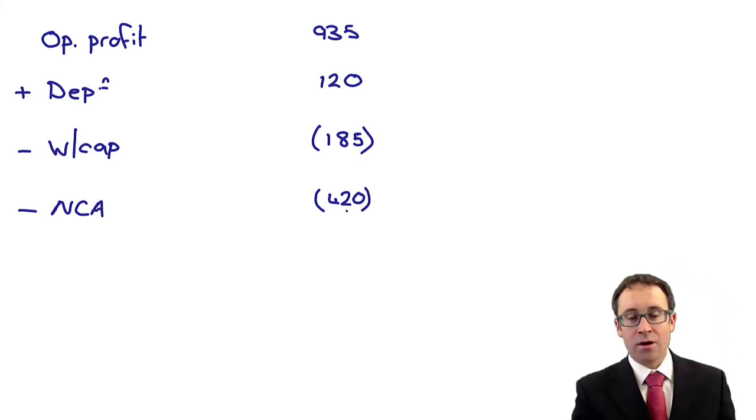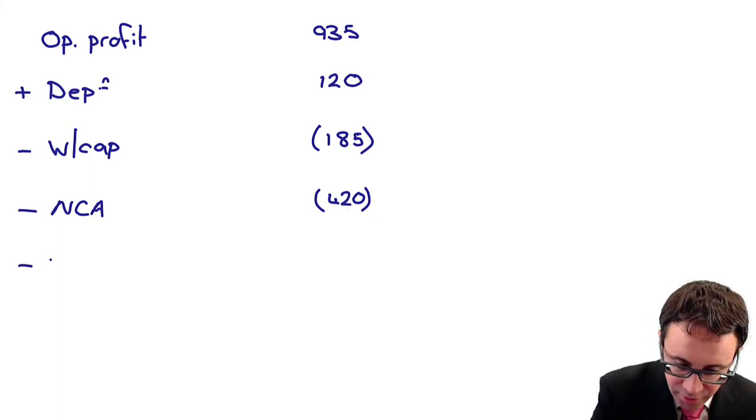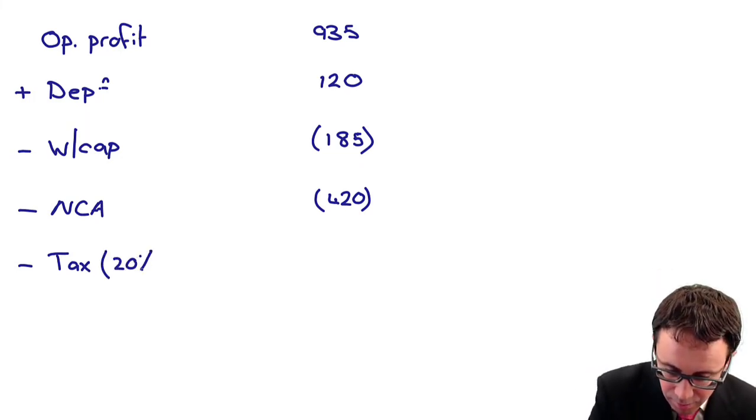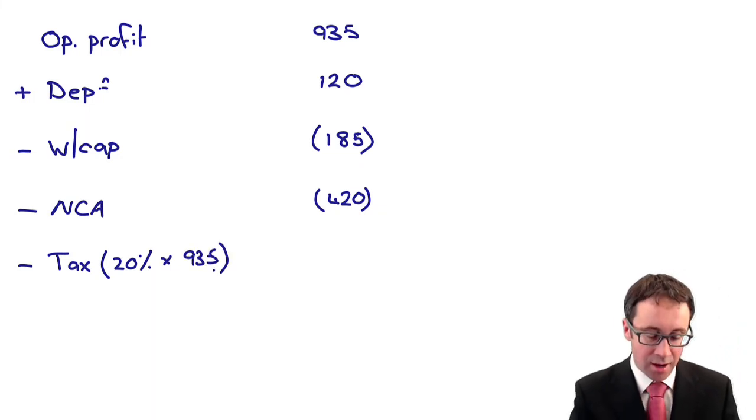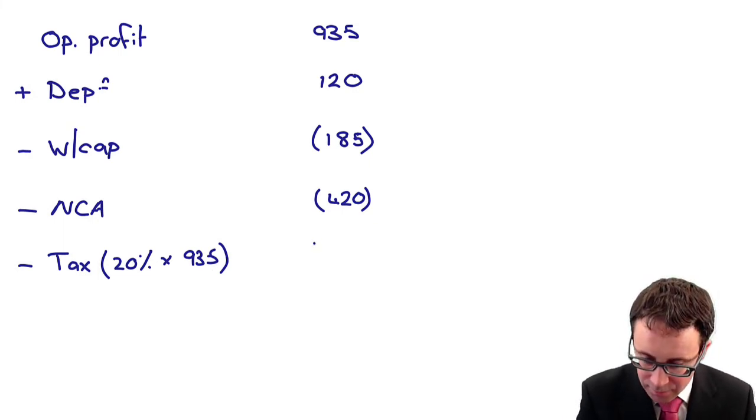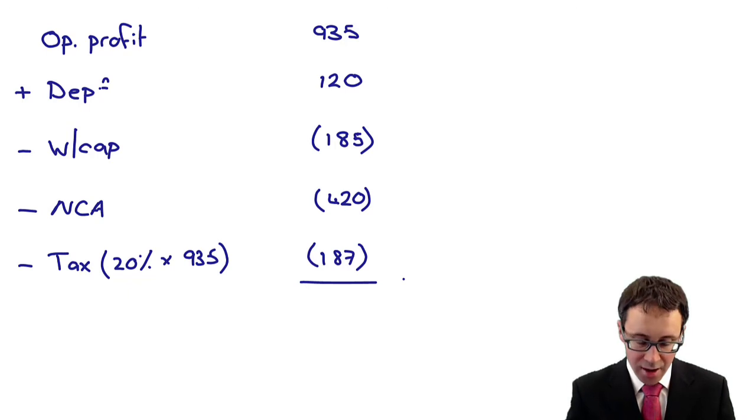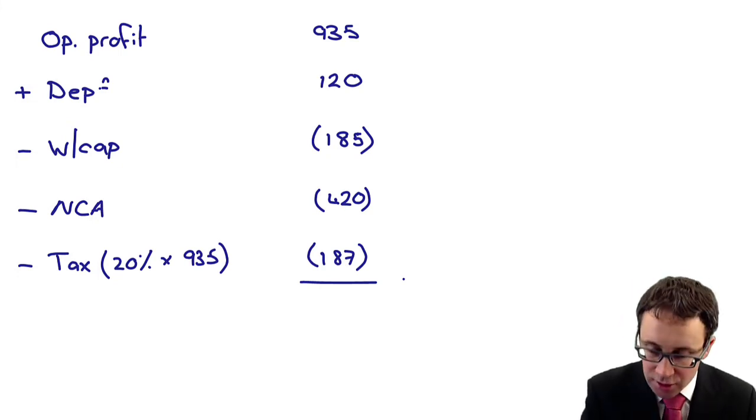And then what we need to do as well to work out our free cash flows, we then need to deduct any tax payments. Tax rate is there at 20%. The operating profit figure is there at 935. So is that there, check maths, is there at 187. So 935 plus 120 less 185 less 420 less 187, is that there's 263.